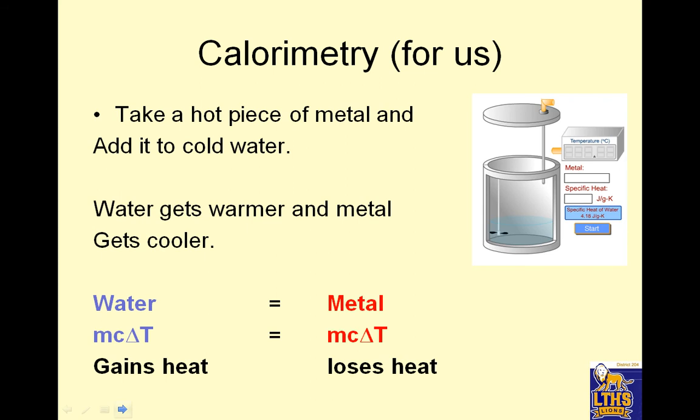Calorimetry for us. Take a hot piece of metal and add it to cold water. The water gets warmer, the metal gets cooler, and eventually they meet. So notice this is my cold water. Water is cold. Metal is hot. MC delta T, the mass of the water, specific heat of the water, and the water is going to change temperature. And then for this, the mass of the metal, specific heat of the metal, change the temperature of the metal. Now if it's losing heat, by the way, this will have a negative sign on it. So it's losing heat. It's going to have a negative sign. This one is gaining heat. It's going to be positive.